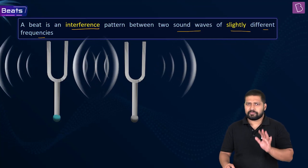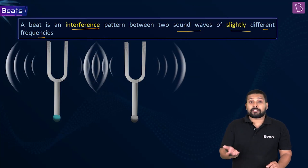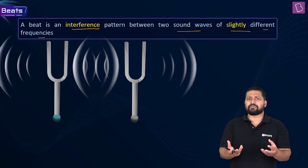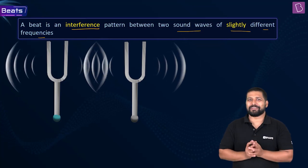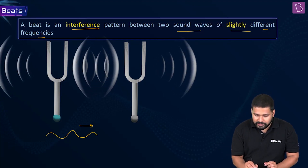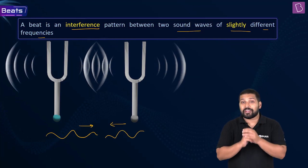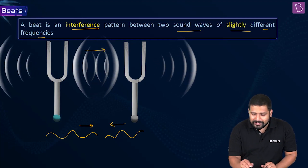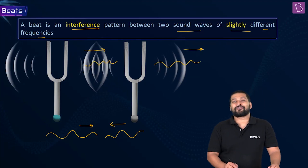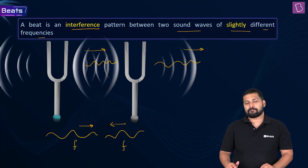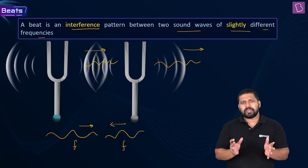Just now we covered standing waves, which is also interference of two waves. So how is a beat different from a standing wave? In the case of a standing wave, two waves move in opposite directions and they superimpose. Their frequencies are the same. In the case of beats, the two waves move in the same direction, and there is a slight difference in their frequencies.